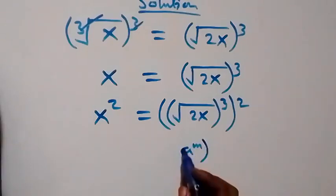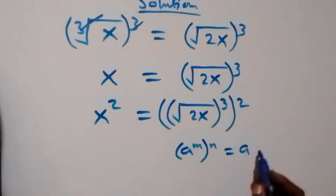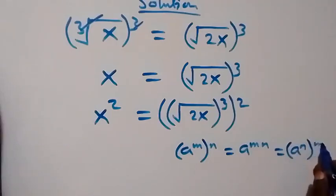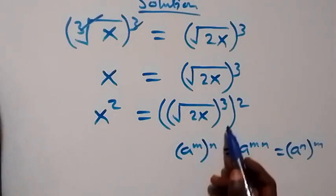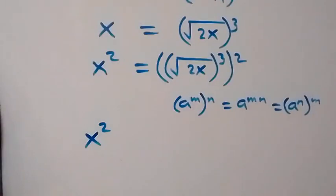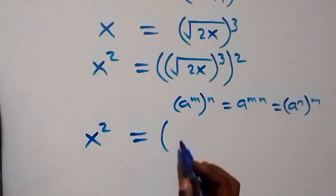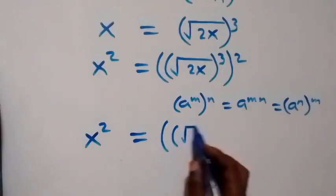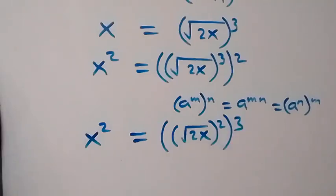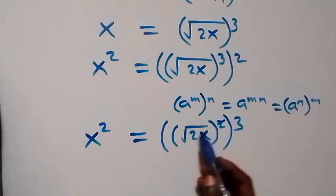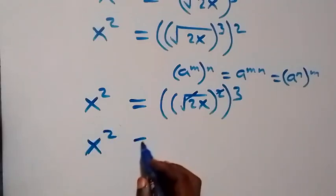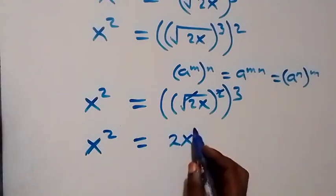Now applying the law of indices: a raised to power m, raised to power n, is the same as a raised to power m times n. This means the powers can be interchanged. So we interchange the powers and we have x squared equals, in brackets, square root of 2x, squared, then raised to power 3. The square and square root cancel, leaving x squared equals 2x, all raised to power 3.